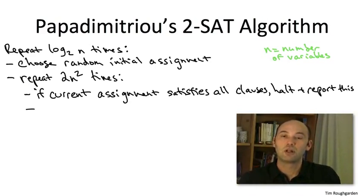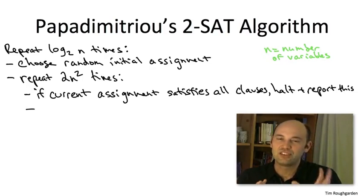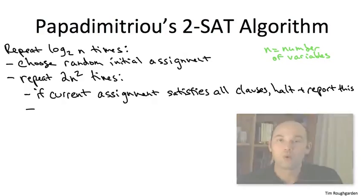Suppose the current assignment is not satisfying. What does that mean? That means there's one clause or maybe many clauses which are not currently satisfied. So, for example, maybe there's some clause involving the variables x3 and x7, and we unfortunately set x3 to be true, x7 to be false, and that's exactly the joint value forbidden by this clause. That is, maybe the clause is not x3 or x7.